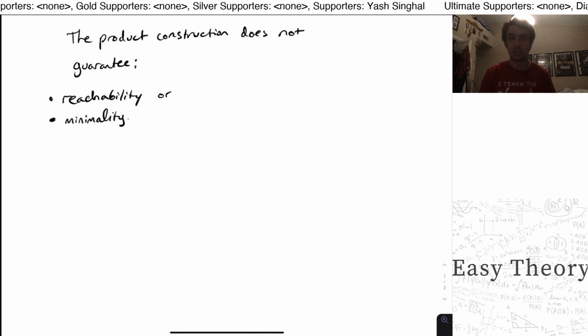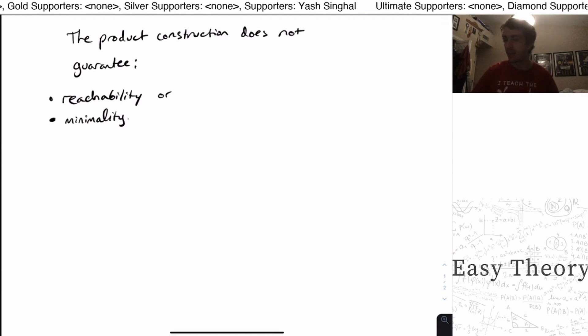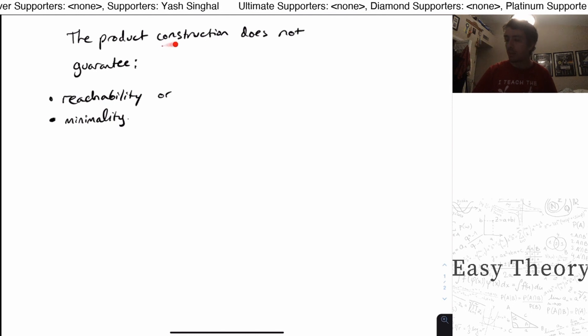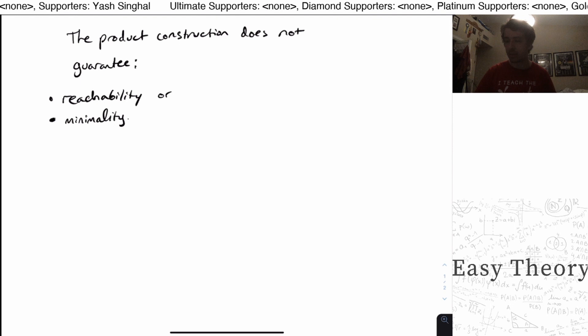Hi, welcome back to another edition of Easy Theory. This was a question we looked at on a recent live stream about the product construction. What I want to show you is that the product construction does not guarantee reachability or minimality.